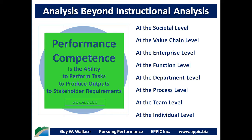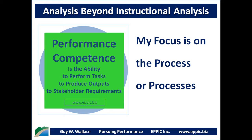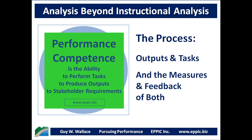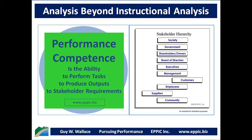This is true at the individual level, at the team level, at the process level, at the department, function, enterprise, value chain, and the societal level. Performance competence is the ability to perform tasks to produce outputs to stakeholder requirements. My focus since 1979 has been on the process or processes. When we look at the process, we need to look at both the outputs of the process and the tasks that produce those outputs, and we need to understand the measures of that performance and the feedback necessary back into the process to improve the outputs as well as the tasks.